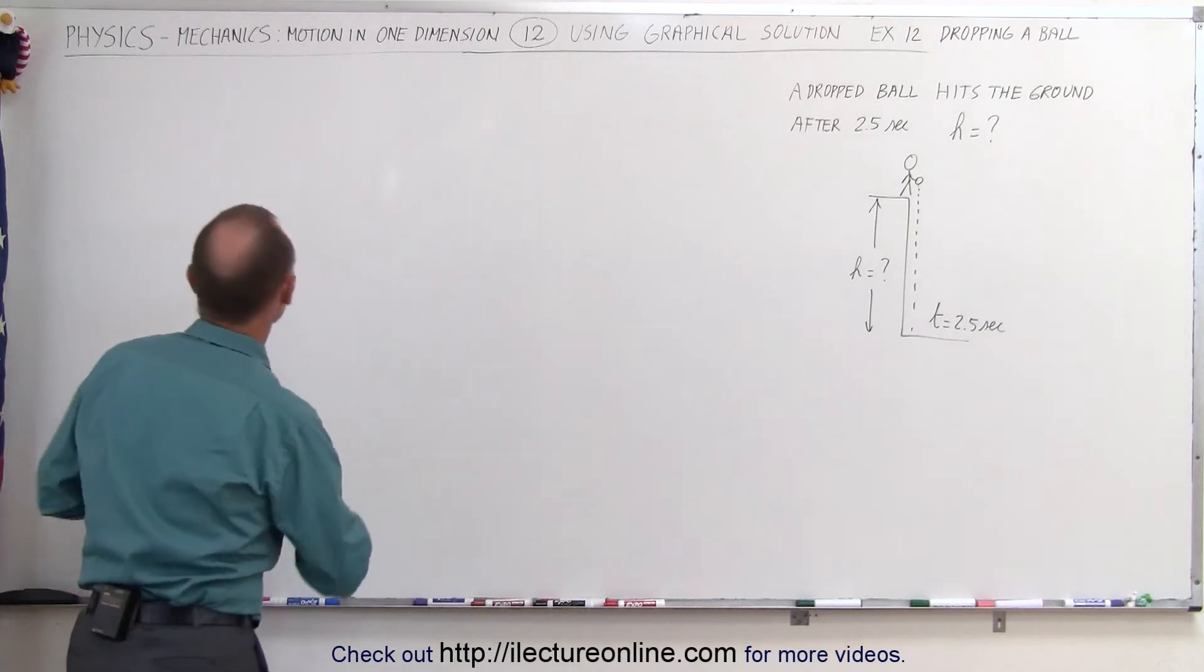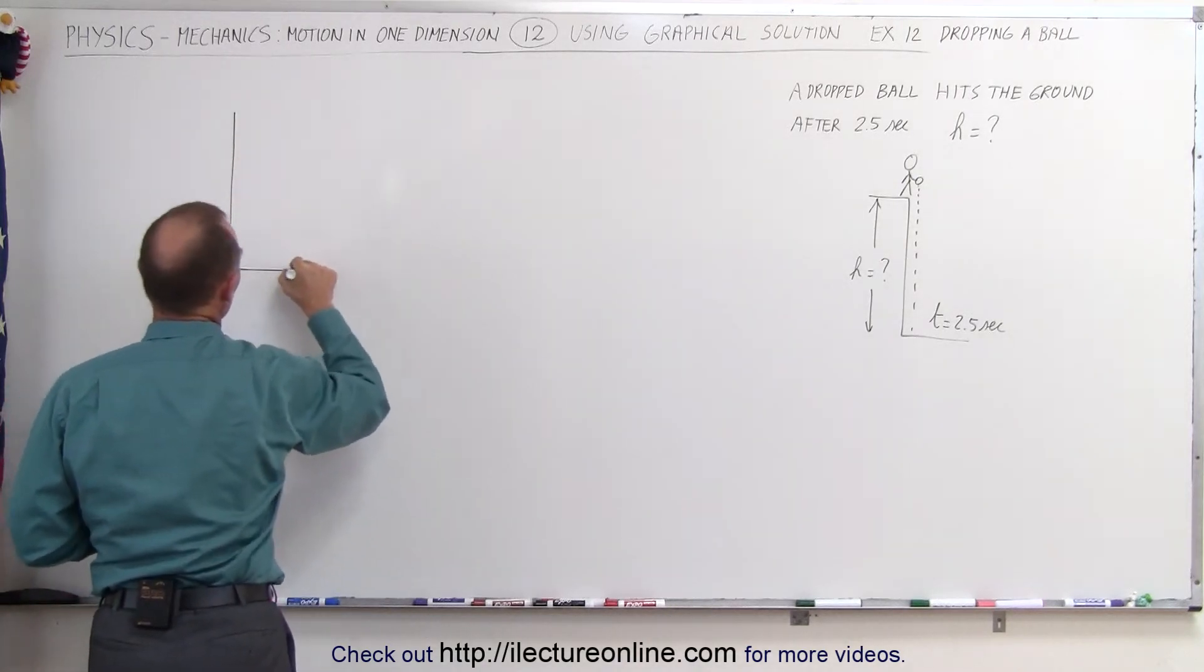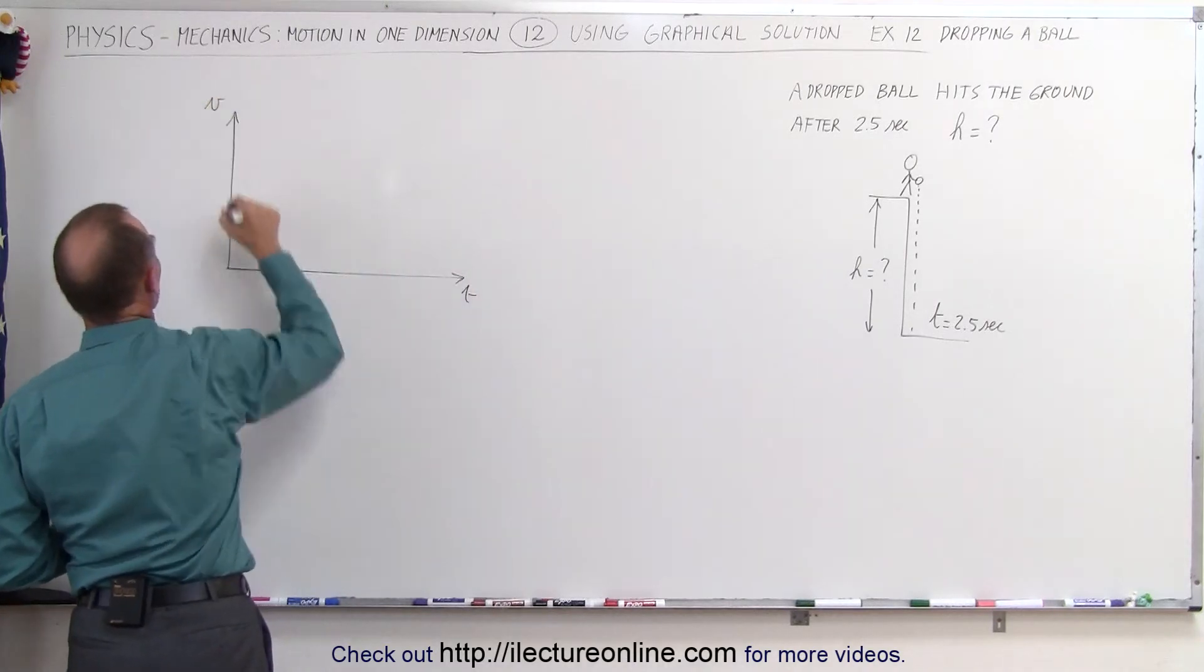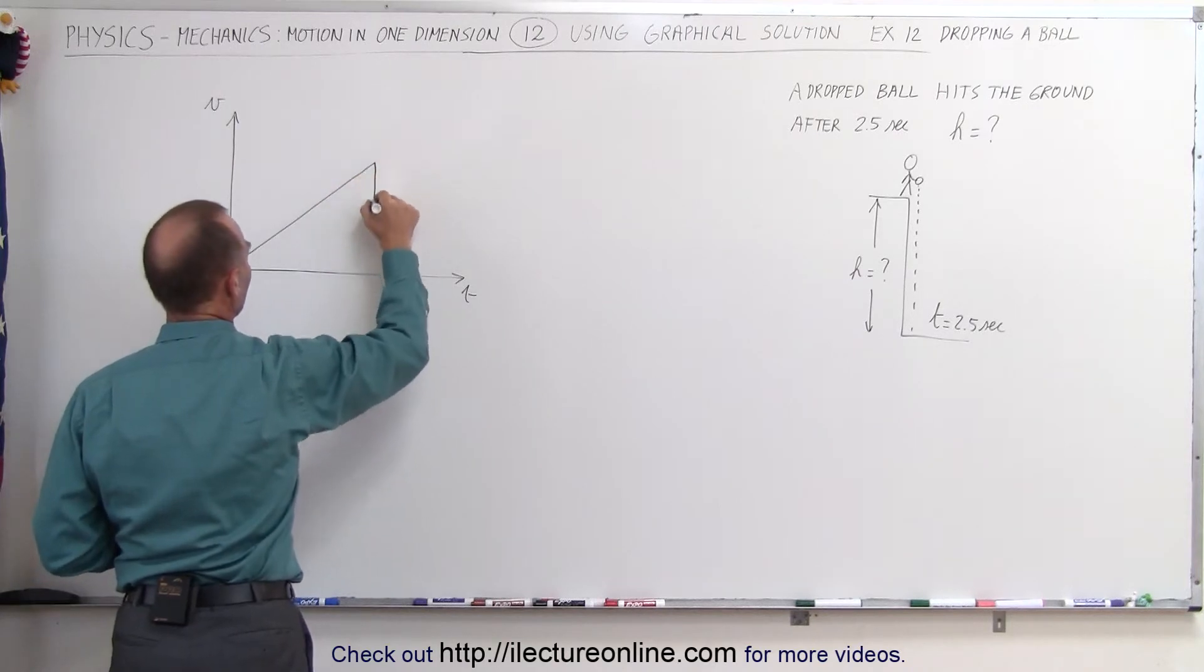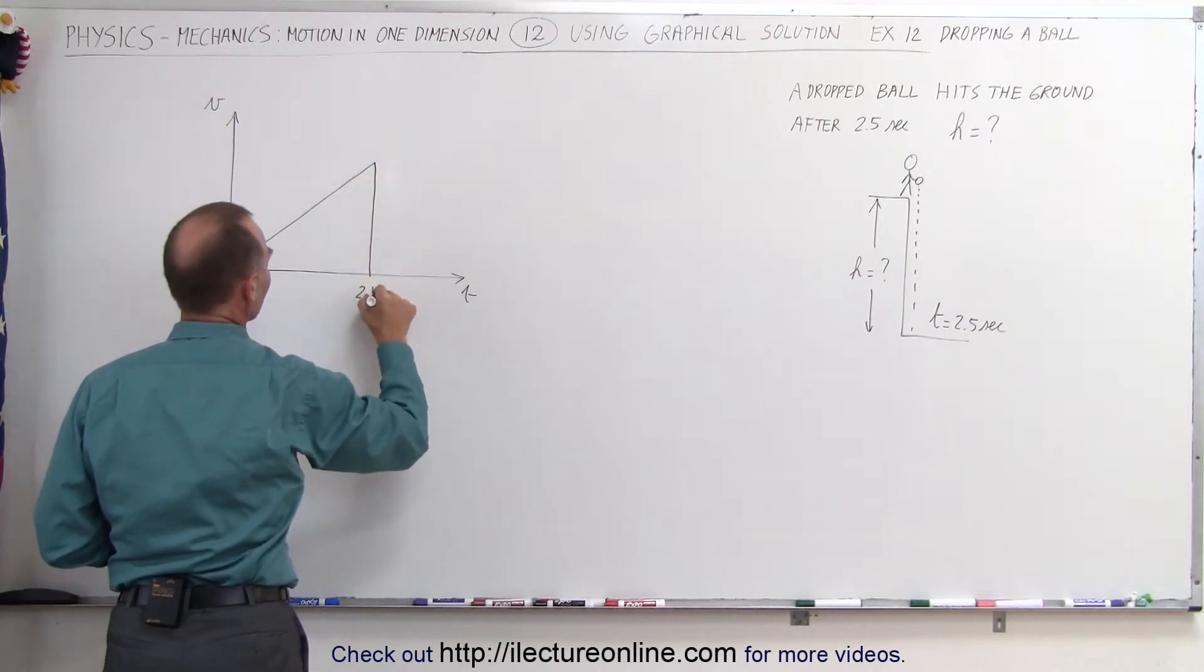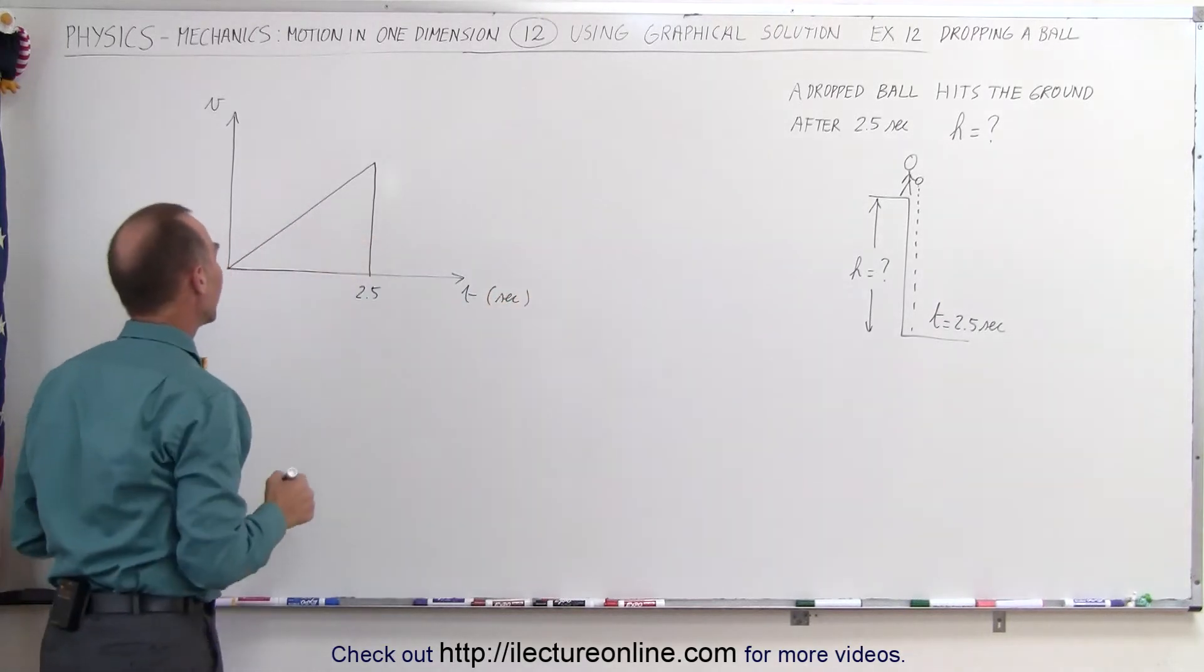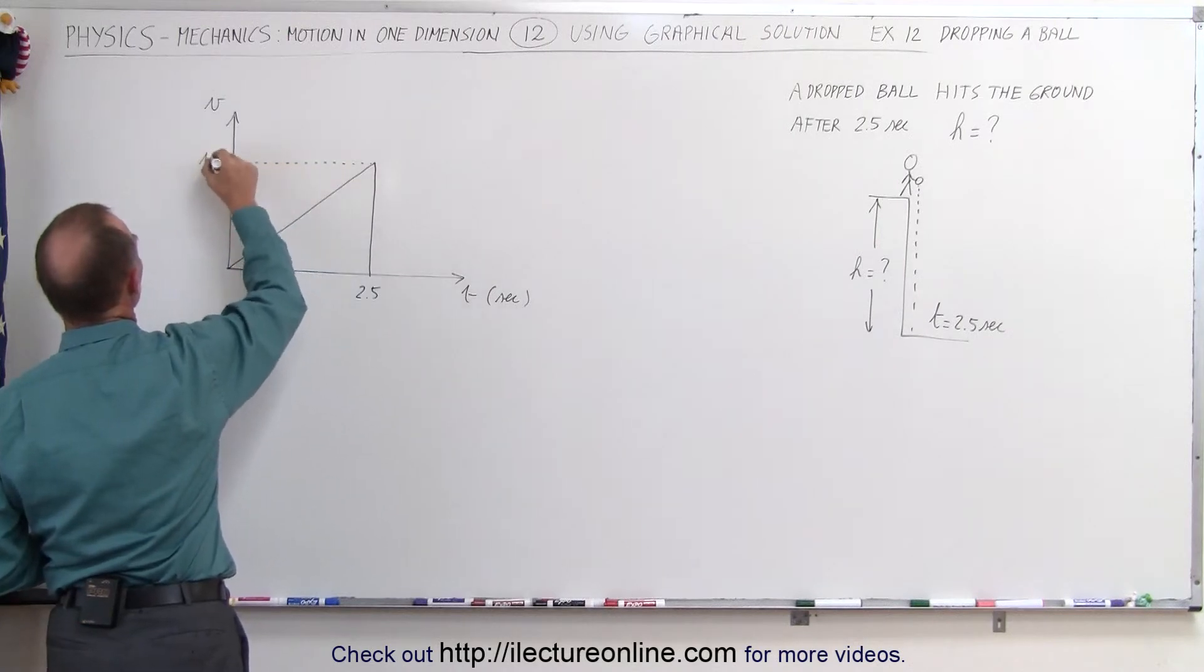So let's draw a velocity versus time graph. The vertical axis is velocity, horizontal axis is time. It would look something like this, would be constant acceleration and after a certain amount of time, 2.5 seconds, the ball would hit the ground and at that point we will have reached a final velocity, v final.